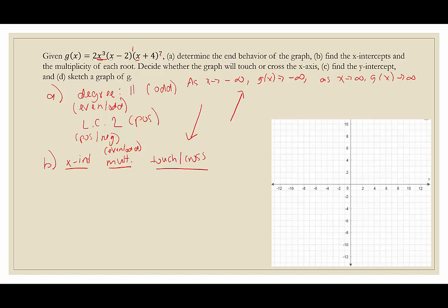Our first x-intercept: set 2x cubed equal to 0, so x equals 0. The multiplicity is 3, which is odd, so it will cross the x-axis. Our next factor is x minus 2; set it equal to 0 and we get an x-intercept of 2. The exponent is 1, so the multiplicity is 1. Since 1 is also odd, it will cross.